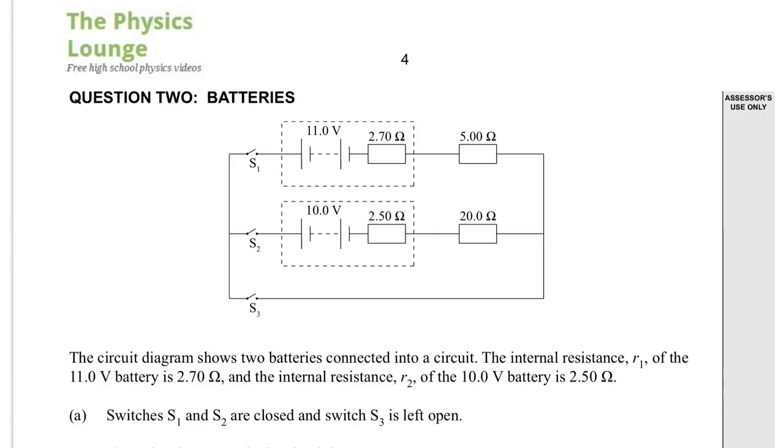2014 electricity level 3 question 2, batteries. The circuit diagram shows two batteries connected into a circuit. The internal resistance of the 11 volt battery is 2.70 ohms, and the internal resistance of the second battery is 2.50 ohms. This is going to be Kirchhoff's laws to work out some unknown, probably currents in the circuit.